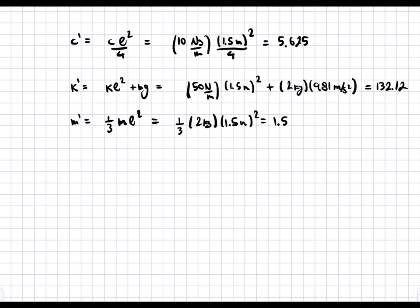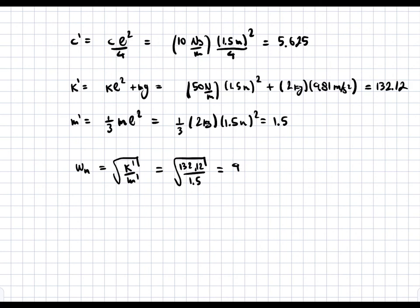Now we calculate the natural frequency. Omega_n equals the square root of k' over m'. Plugging in: omega_n = √(132.12 / 1.5) = 9.385 radians per second. But we're not asked for the natural frequency — we're asked for the damped frequency.